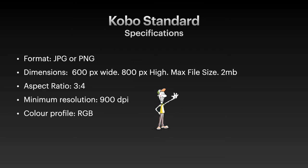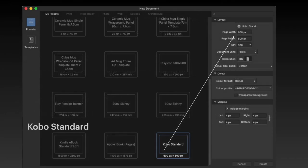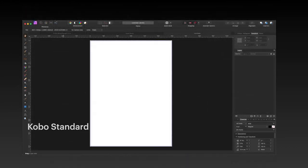Kobo — lots of people are using Kobo, so don't be fooled by the fact that you don't hear much about it. Now it's a strange one: 600 pixels wide by 800 pixels high, and the maximum file size you can upload is 2 megabytes — that's really small. The aspect ratio is 3 to 4, with a minimum resolution of 900 DPI. I've yet to discover what they mean by that because it's a very odd DPI for a 2 megabyte maximum file size — you may have to experiment. There's your preset, easy enough to make.